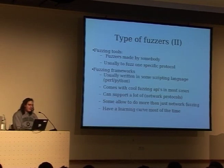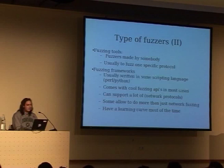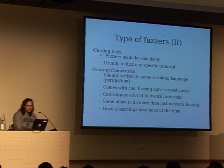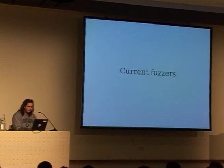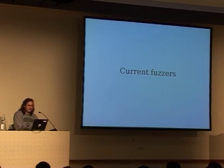Most frameworks are specifically focused towards network fuzzing. But there's at least one — Peach — which does more than just network fuzzing: file fuzzing, API fuzzing, and all the things I just summed up. The thing about these fuzzing frameworks is that they've got a learning curve because you need to know the API, and if it's a language you don't know, you'll want to learn at least the basics.